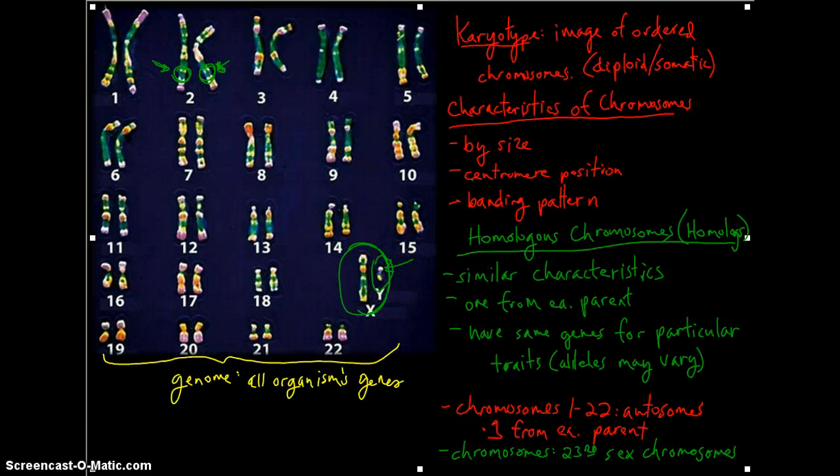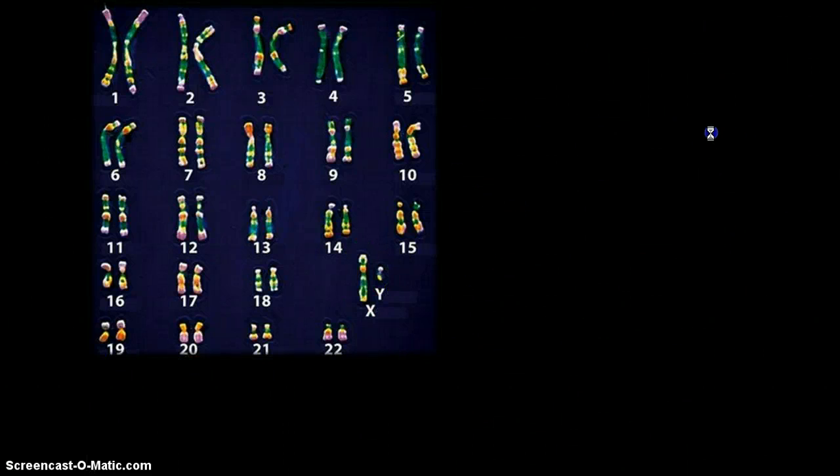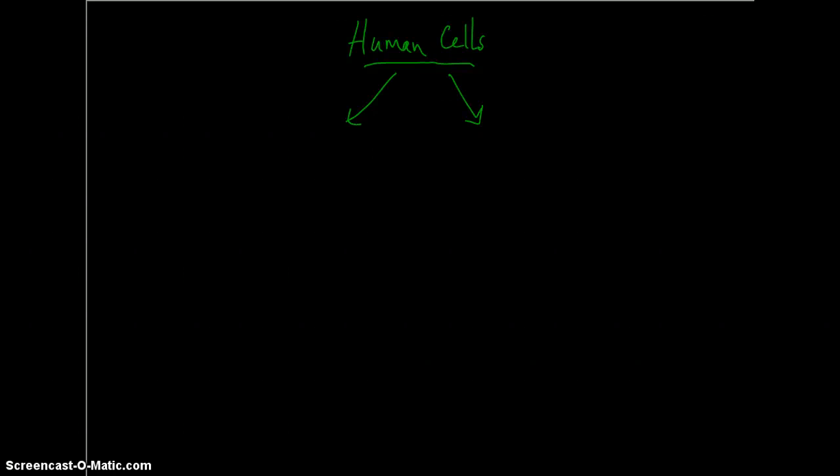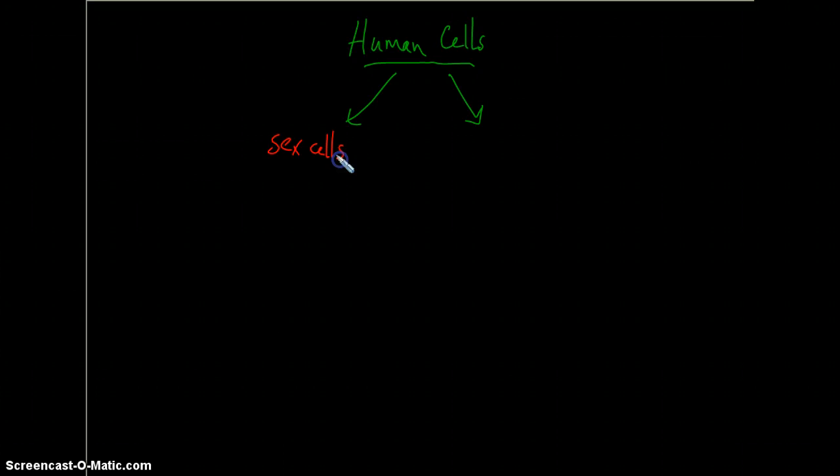Okay, what I'd like to do is transition slightly and look at two basic categories of human cells. One type of cell would be the sex cells, sometimes referred to as the gametes.